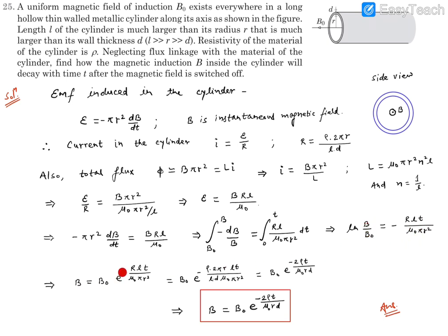From here B can be calculated as B = B₀e^(-RLt/μ₀πr²). This R is resistance with this expression, so we can put the resistance value over here, which is ρ·2πr/(Ld).